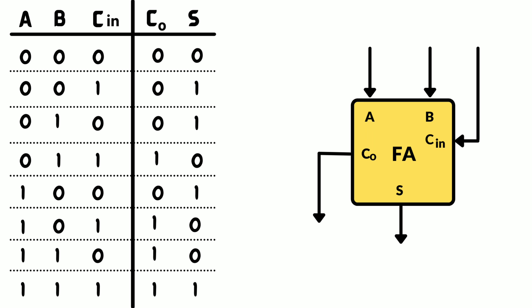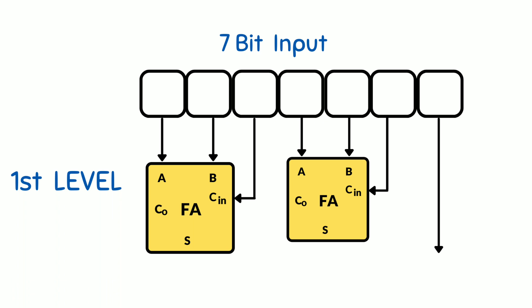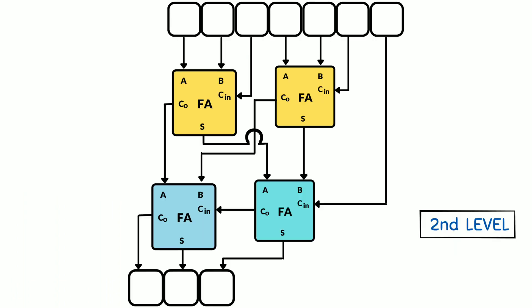Now we will use full adders to count the number of ones in a 7-bit vector. In the first stage, we will add the first three bits using one full adder and the next three bits using another full adder. The last bit will be used as a carry in the second stage.